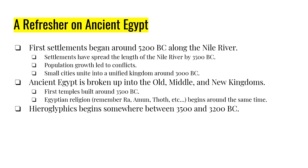Now ancient Egypt — just another refresher — it's broken into the old kingdom, the middle kingdom, and the new kingdom. The old kingdom is where most of the religion is figured out. The middle kingdom is what happens after the Hyksos attack and take over. And then the new kingdom occurs once the Hyksos are defeated — that's where we get Amarna, and that's where we get Akhenaten, Tutankhamun, and all those figures.